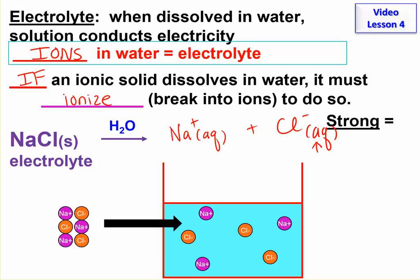This is a strong electrolyte because it totally or completely ionizes. In other words, 100% of the sodium chloride is in the ion form when it's in water.